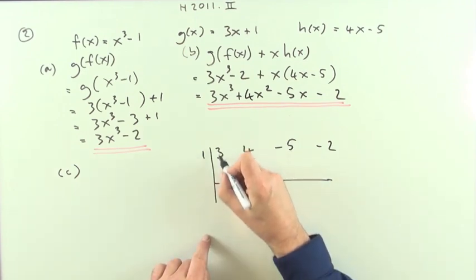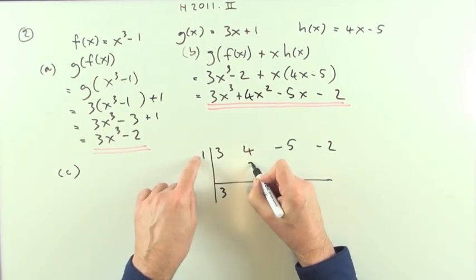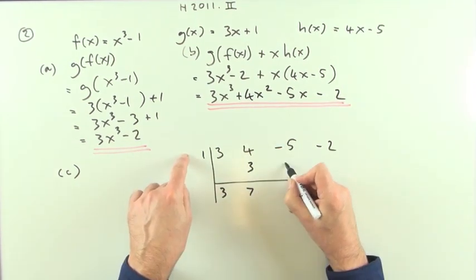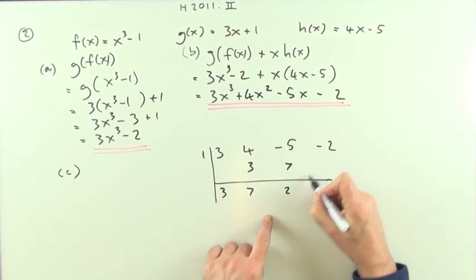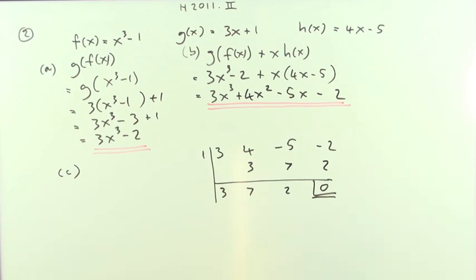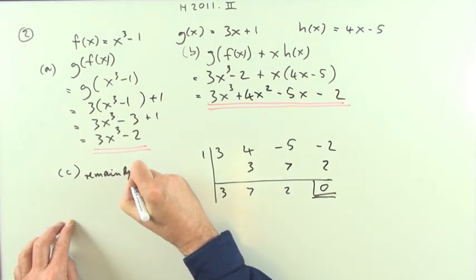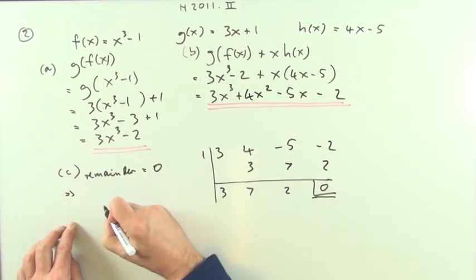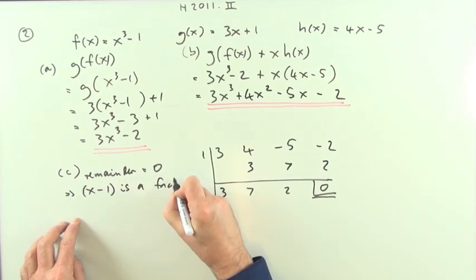Add it down, multiply up, add it down, multiply it up, add it down, multiply it up, add it down. And indeed the remainder, so you make that statement: remainder equals zero, which means x minus 1 is a factor.